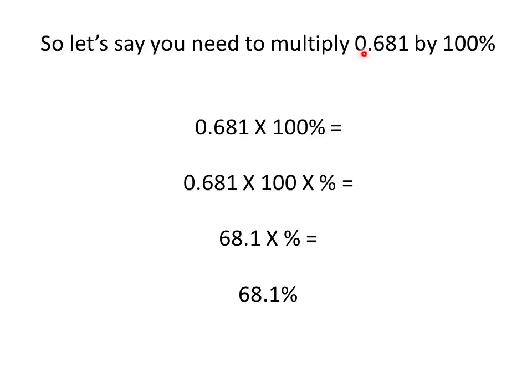In other words, 0.681, the decimal form of this number, equals 68.1 percent, which is the percentage form of this number.